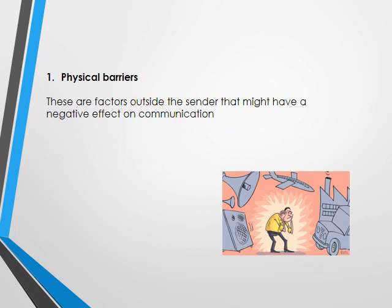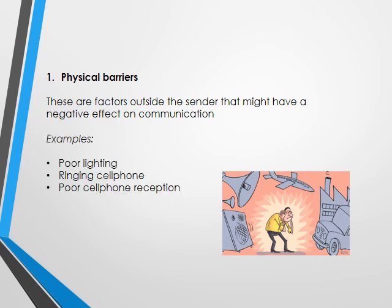Our first type of barrier is a physical barrier. These are things outside your body, outside the sender, that may have a negative effect on communication. Think about a noise outside your classroom or a ringing phone — if my phone had to ring now while I'm recording this lesson, that would stop the communication from happening. Examples are poor lighting, a ringing cell phone, or poor cell phone reception when you really can't hear what people are saying. Remember these are the ones outside your body.